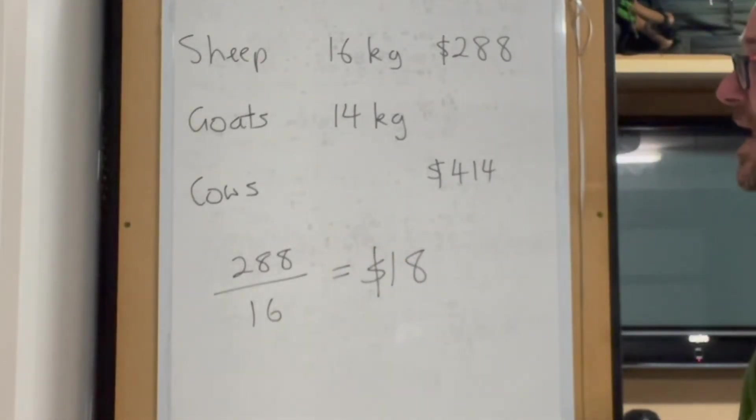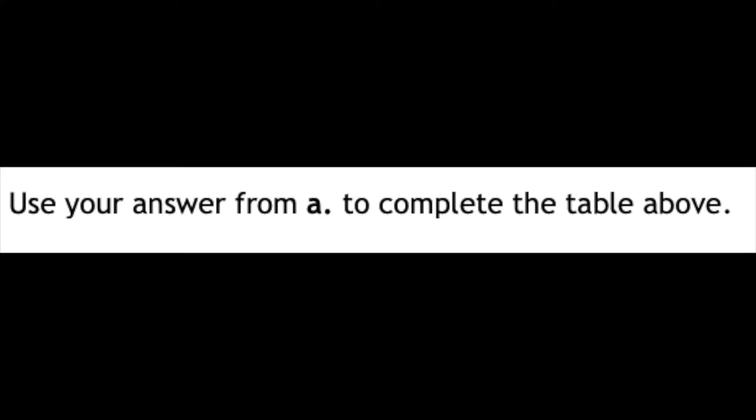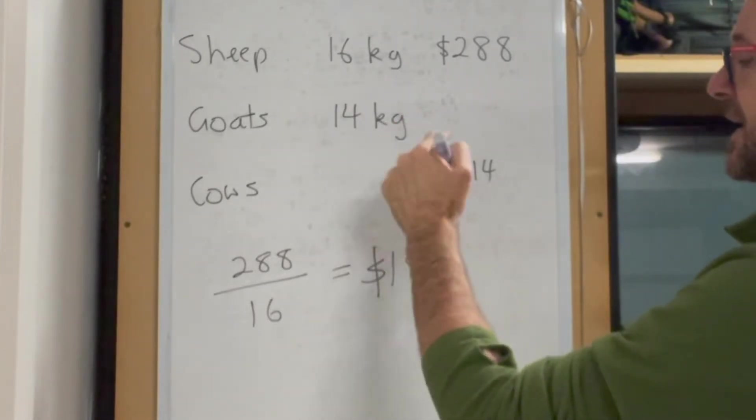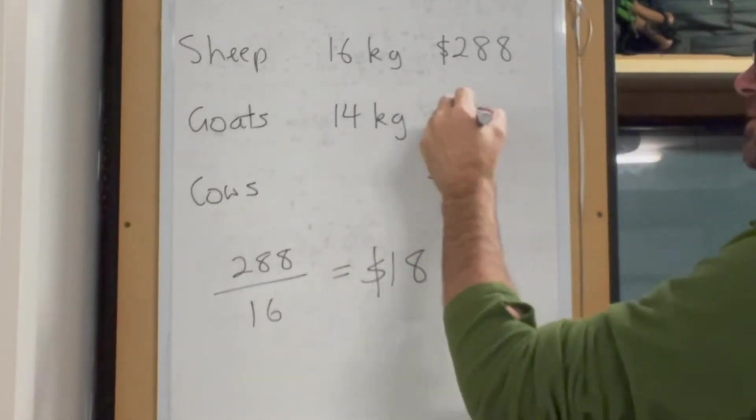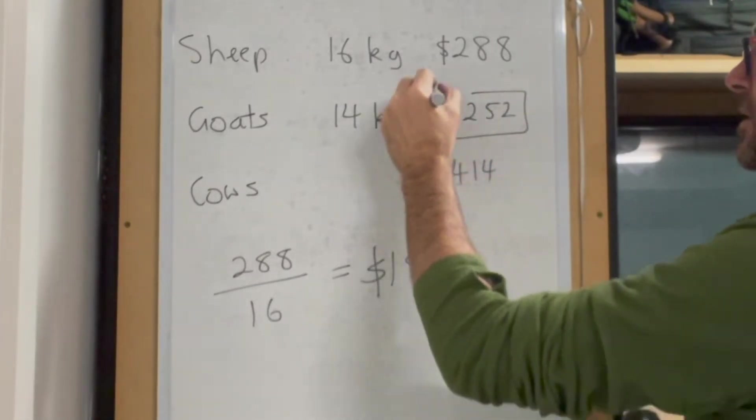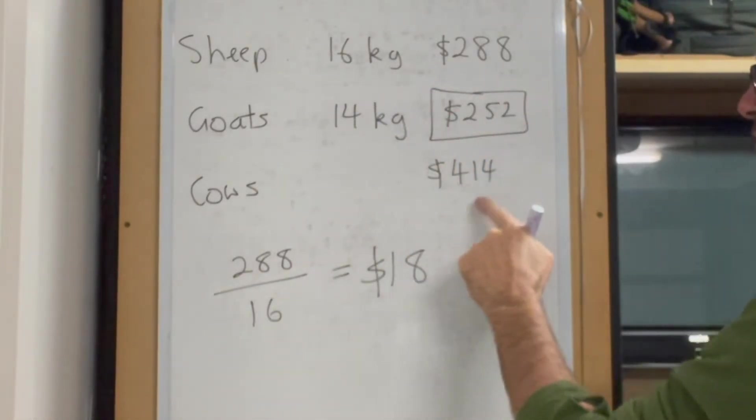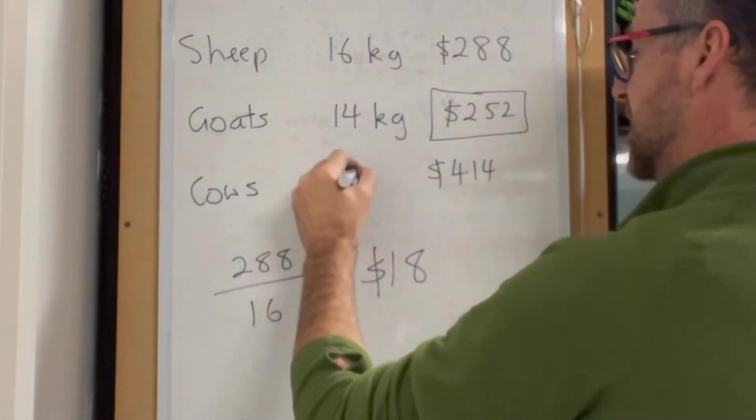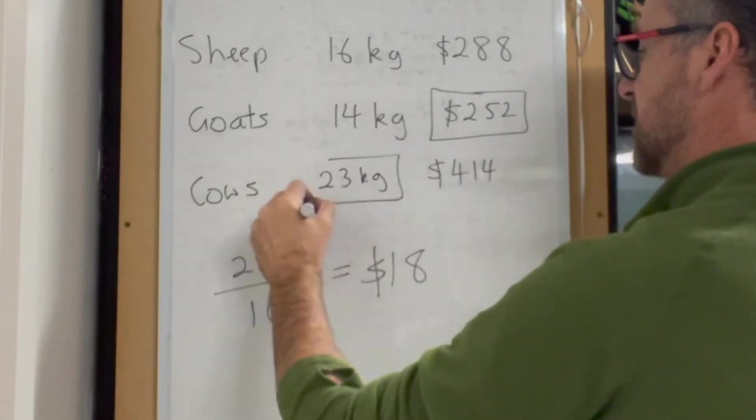We can use that to calculate the other parts. 14 multiplied by 18 gives us $252. And 414 divided by 18 gives us 23 kilos as the other answer.